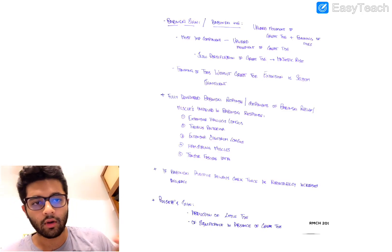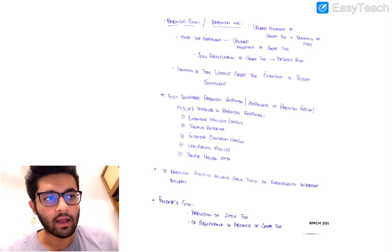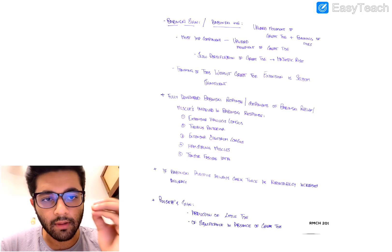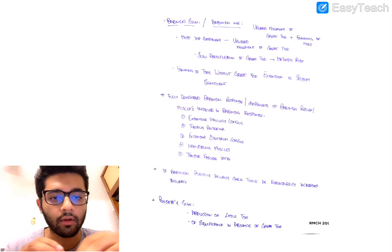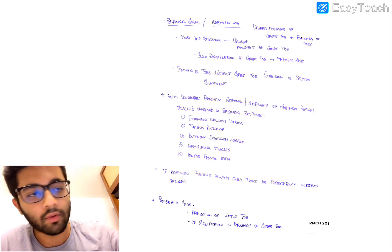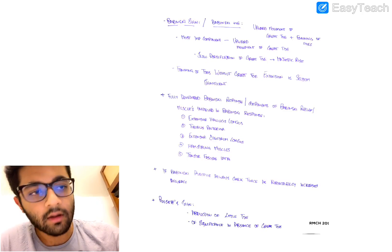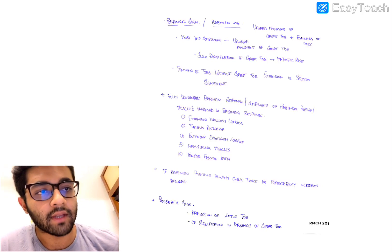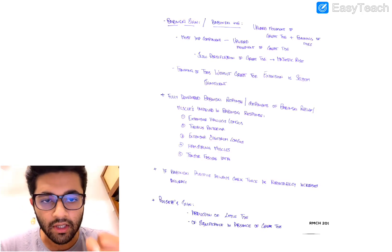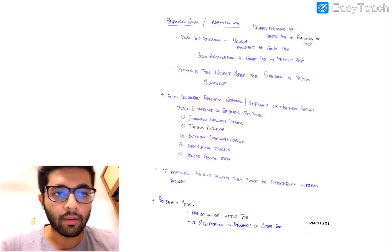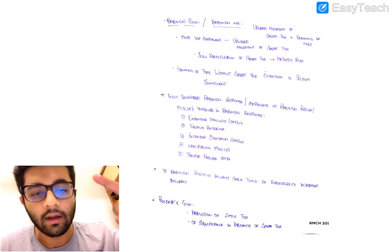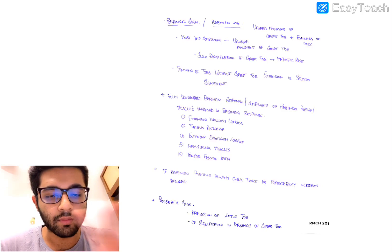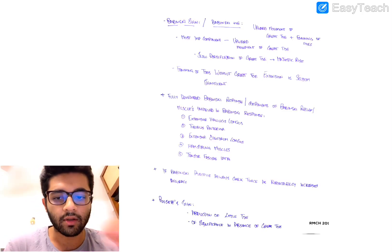Examiners love asking about the components of a true Babinski test. A true or complete positive Babinski has five components — it's not just the toe going up or toes fanning. The five components are: extensor hallucis longus, tibialis anterior, extensor digitorum longus, hamstring muscles, and tensor fascia lata. A true positive Babinski even includes slight abduction at the hip. Only when all five contract together is it a true Babinski. Always repeat the test once more to be sure.